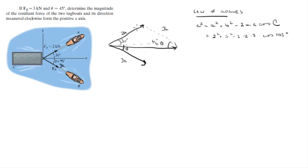Where did I get this 105 degrees? Well, this line is parallel to the x-axis. We know that this angle is 30 degrees. Therefore, this angle is also 30 degrees. And we know that this angle is 45 degrees.